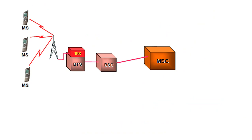I am taking a diagram in which there are three mobile stations which are further connected to a tower, and these towers are connected to BTS using TRX. Then further it is connected to BSC and MSC.